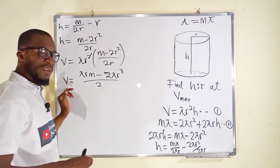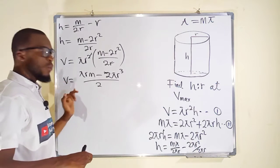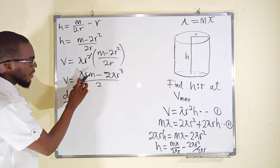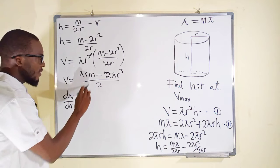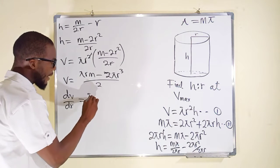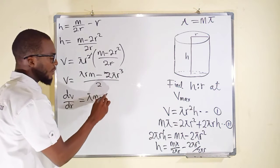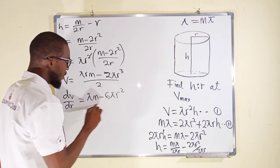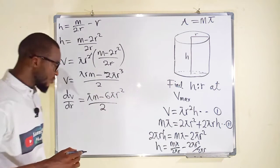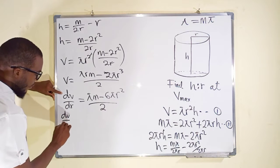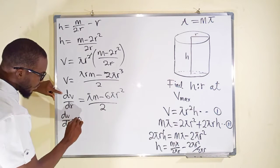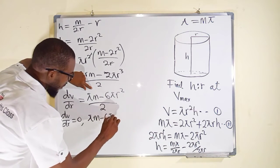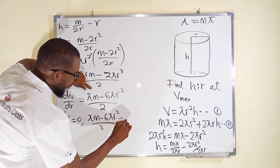Now let us find the critical points by taking the first derivative of V with respect to r. We have dV/dr. Remember, M and pi are constants here. Differentiating gives pi M minus (3 times 2) which is 6, so we get 6 pi r squared divided by 2. Setting dV/dr equal to zero: pi M minus 6 pi r squared over 2 equals zero.